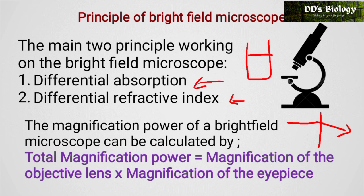We can also see light that bends — that is refraction. If light passes through a medium it bends to another side; this is the refractive index. Based on the refractive index, some specimens are thick, thin, stained, etc. There is a difference in each specific organism, which is why the refractive index relates to differential absorption. This is the principle.